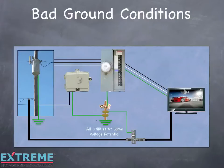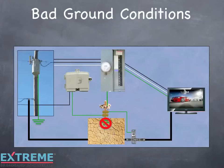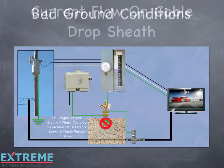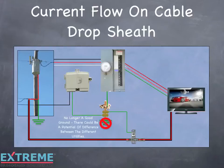There may be times when the common ground that the power utility establishes is no longer a good ground point. This can happen due to poor soil conditions such as rocky, sandy, or very dry soil where the ground rod does not make good contact with the soil. No longer a good ground, there could be a difference of potential between the different utilities. When this happens, each utility could be at a different ground potential. This can cause a voltage drop across the coaxial cable shield, which results in current flow on the shield of the coaxial cable. Now some of the return AC current flows on the coaxial shield back to the transformer, along with the normal neutral path.